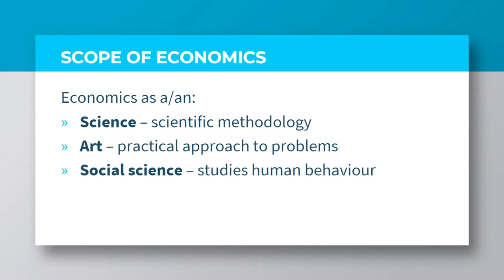The scope of economics refers to the expanse of the field of study. Economics is considered as a science because it uses the scientific process to investigate the possibility of deducing generalizations as regards the economic motives of human beings. It is an art since it adopts a practical approach to solving economic problems. The draw line between considering economics as a science or an art is that science teaches knowledge, and art teaches practice. The fact that economics literally focuses on human behavior as regards how resources are managed simply makes it a social science.